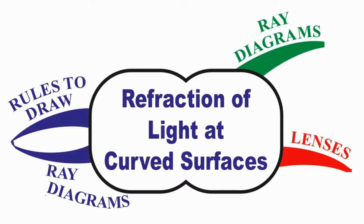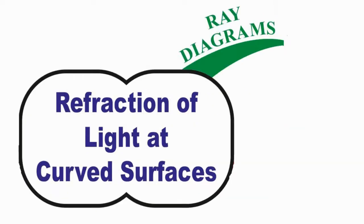This chapter includes important concepts which are taken as branches here. The branches are Ray Diagrams, Lenses, and Rules to Draw Ray Diagrams. Let us see the first branch, Ray Diagrams.